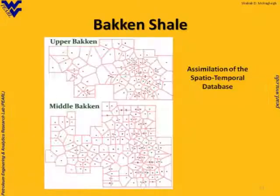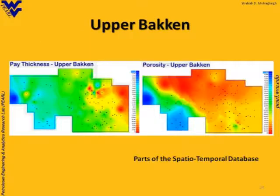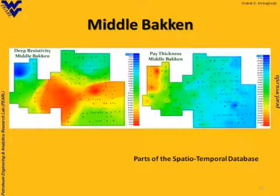Now for Bakken shale — we did the same thing. The difference is Bakken is producing oil. As you know, Bakken has three layers: upper Bakken, middle Bakken, and lower Bakken. Upper Bakken is completely shale; middle Bakken is a sort of limestone type. These are the maps, again from completely public data — pay thickness and porosity maps for upper Bakken, and resistivity and pay thickness for middle Bakken.